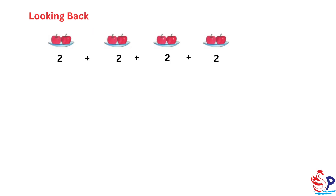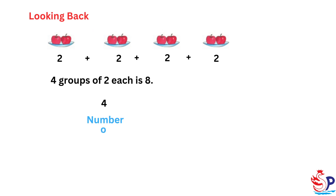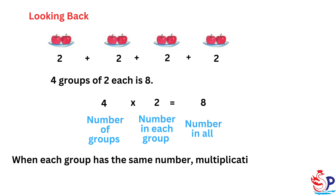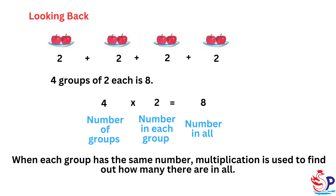Looking back: 2 plus 2 plus 2 plus 2 — 4 groups of 2 each is 8. 4 is the number of groups, multiplied by 2, the number in each group, equals 8, the number in all. When each group has the same number, multiplication is used to find out how many there are in all.